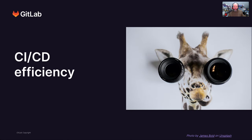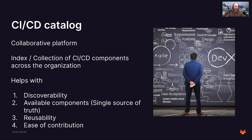Let's have a deeper look into CI/CD efficiency specifically — continuous integration and continuous delivery or deployment. At GitLab, we created a CI/CD catalog, which is a collaborative platform providing an index or collection of CI/CD components across the entire organization. This helps with discoverability — you can immediately see available components and have a single source of truth. There is reusability — you know where to look when you want to reuse something. And there's ease of contribution — you can add your own components, review existing ones, contribute new features and optimizations. It's truly a cross-collaboration effort to maintain the CI/CD catalog.